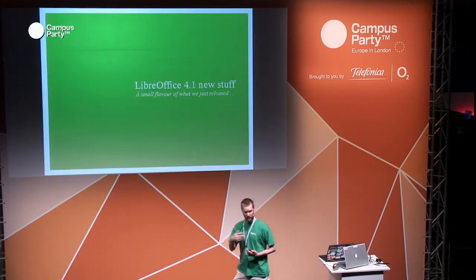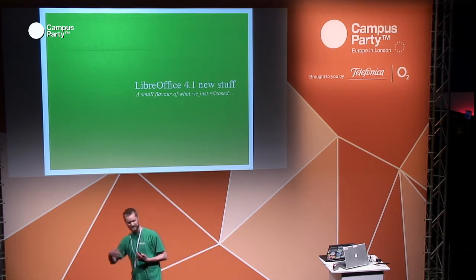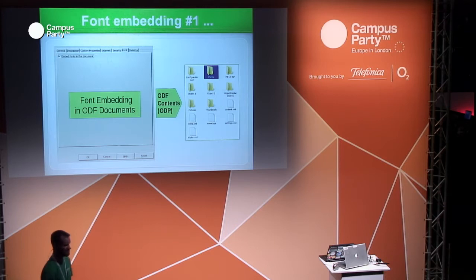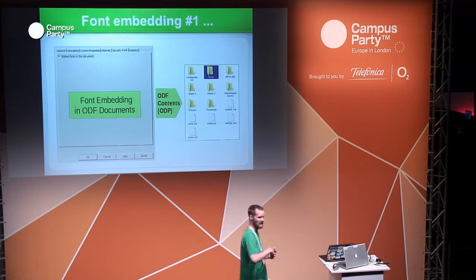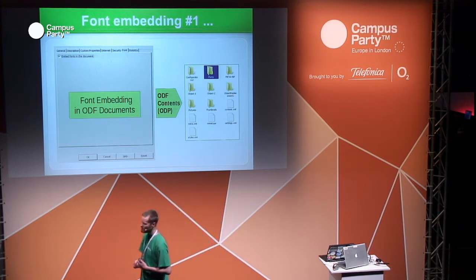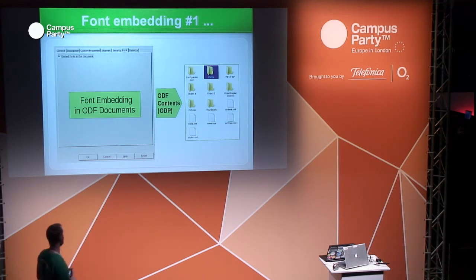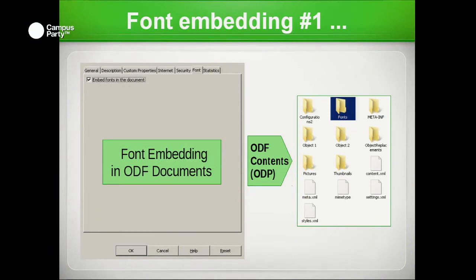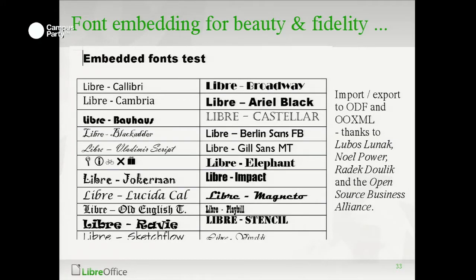In 4.1, just released — we do a release every six months — one of the problems we've had is font embedding. When you create a beautiful document and mail it to someone with different fonts, particularly on Linux without Microsoft proprietary fonts, your document looks mangled. The Open Source Business Alliance funded SUSE to do font embedding, so now you can click a checkbox and all your custom fonts — the Joker Man font or whatever — actually work at the other end. A very high fidelity result, which is a great improvement.